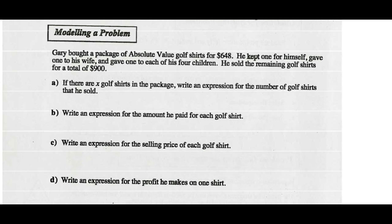So he kept one for himself, one for his wife, and gave one to each of his four children. There were X in the package, but he kept one plus his wife and four children — that's six. So X minus six would be the number he sold.